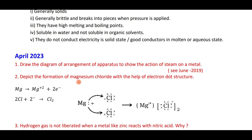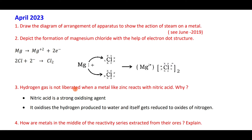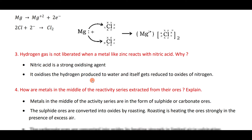Depict the formation of magnesium chloride: magnesium loses two electrons, which are added to the valence shell of chlorine, forming MgCl₂. Hydrogen gas is not liberated when metals like zinc react with nitric acid because nitric acid is a strong oxidizing agent — hydrogen is oxidized to water and the acid is reduced to oxides of nitrogen.